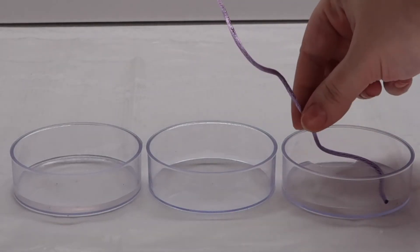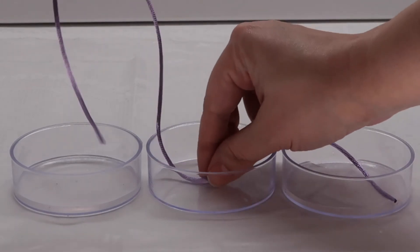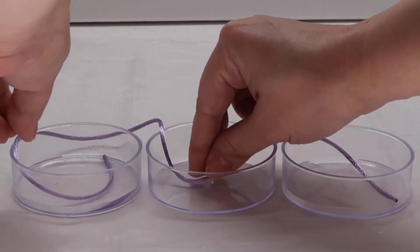Make a bridge with the purple string between the 3 dishes. The string should touch rest in each petri dish.